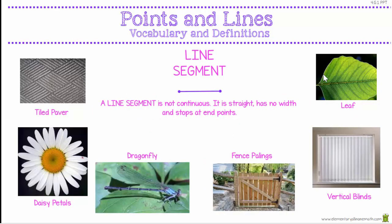Line segment. A line segment is not continuous. It is straight. It has no width, and it stops at both ends. In nature we can see lines on tiles, lines on daisy petals, lines on the wings and body of the dragonfly. Fence palings have got lots of lines, and so do vertical lines. The main vein on a leaf is a nice straight line as well.